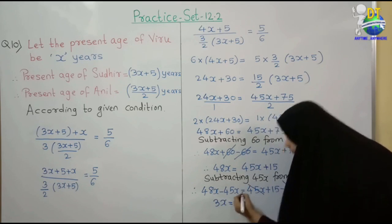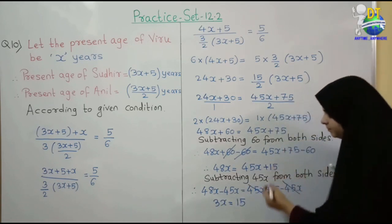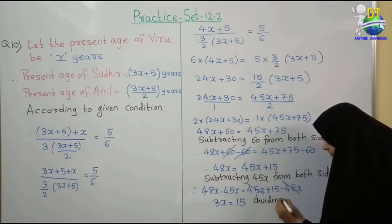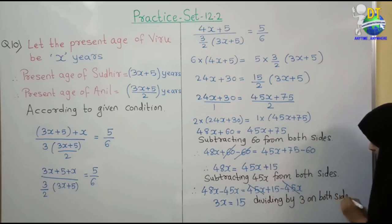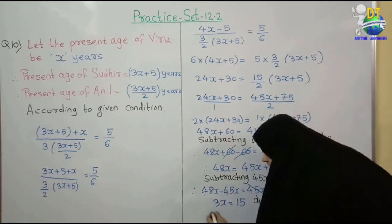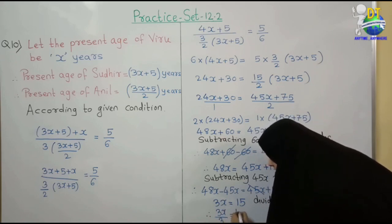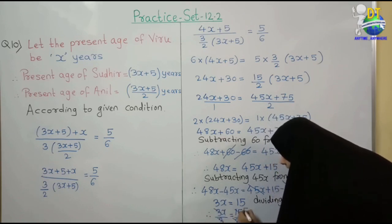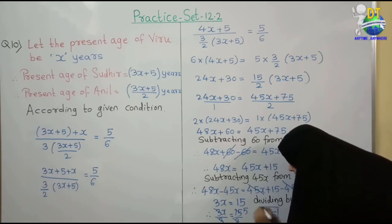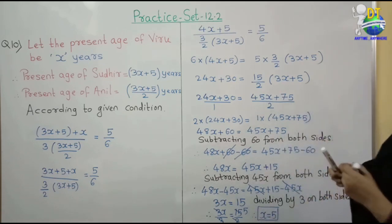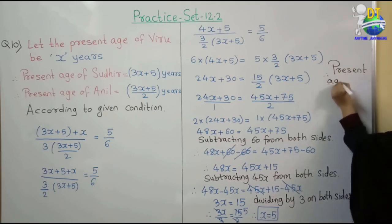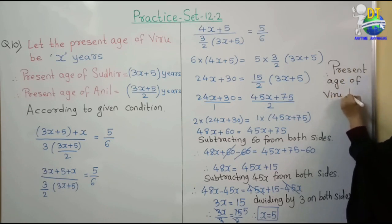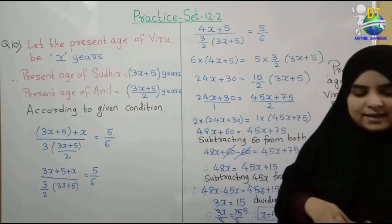3x = 15. Dividing by 3 on both sides — 3x/3 = 15/3 — therefore x = 5. But what is x, student? x is the present age of Viru. Therefore, present age of Viru = 5 years. Viru की age 5 years है। Is that clear?